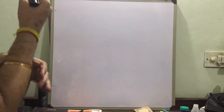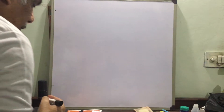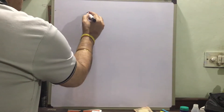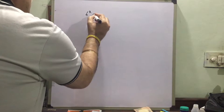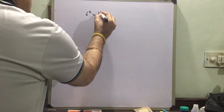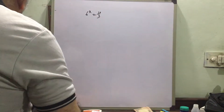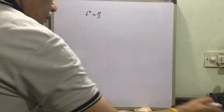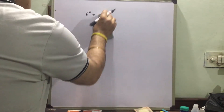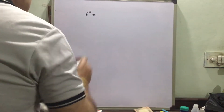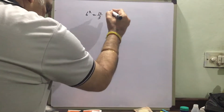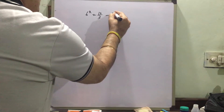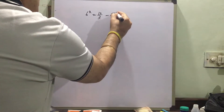Dear friends, welcome to my channel, where we will solve one exponential equation: 6 raised to the power of x, equal to 10√3, minus 6 raised to the power of x.